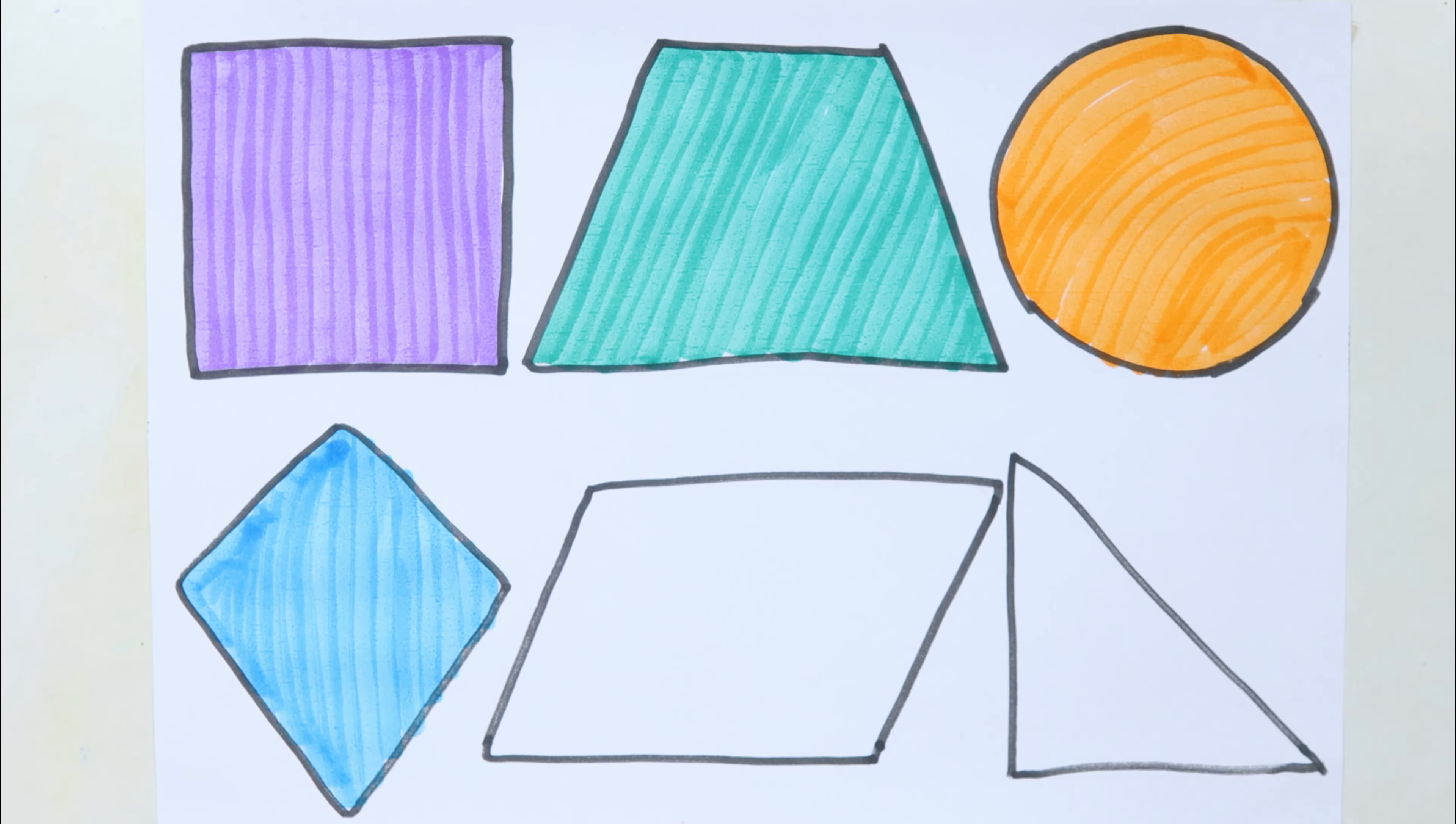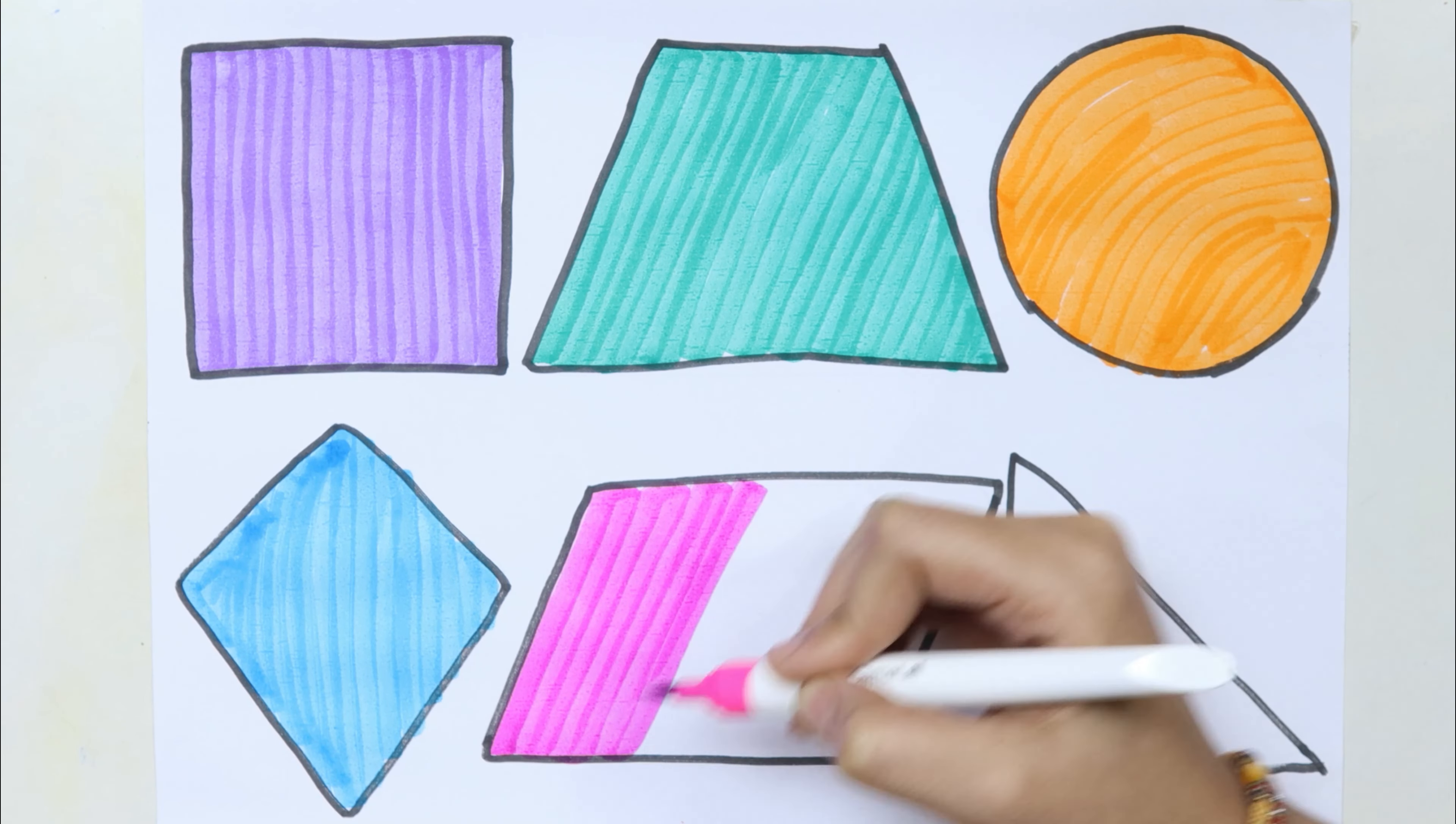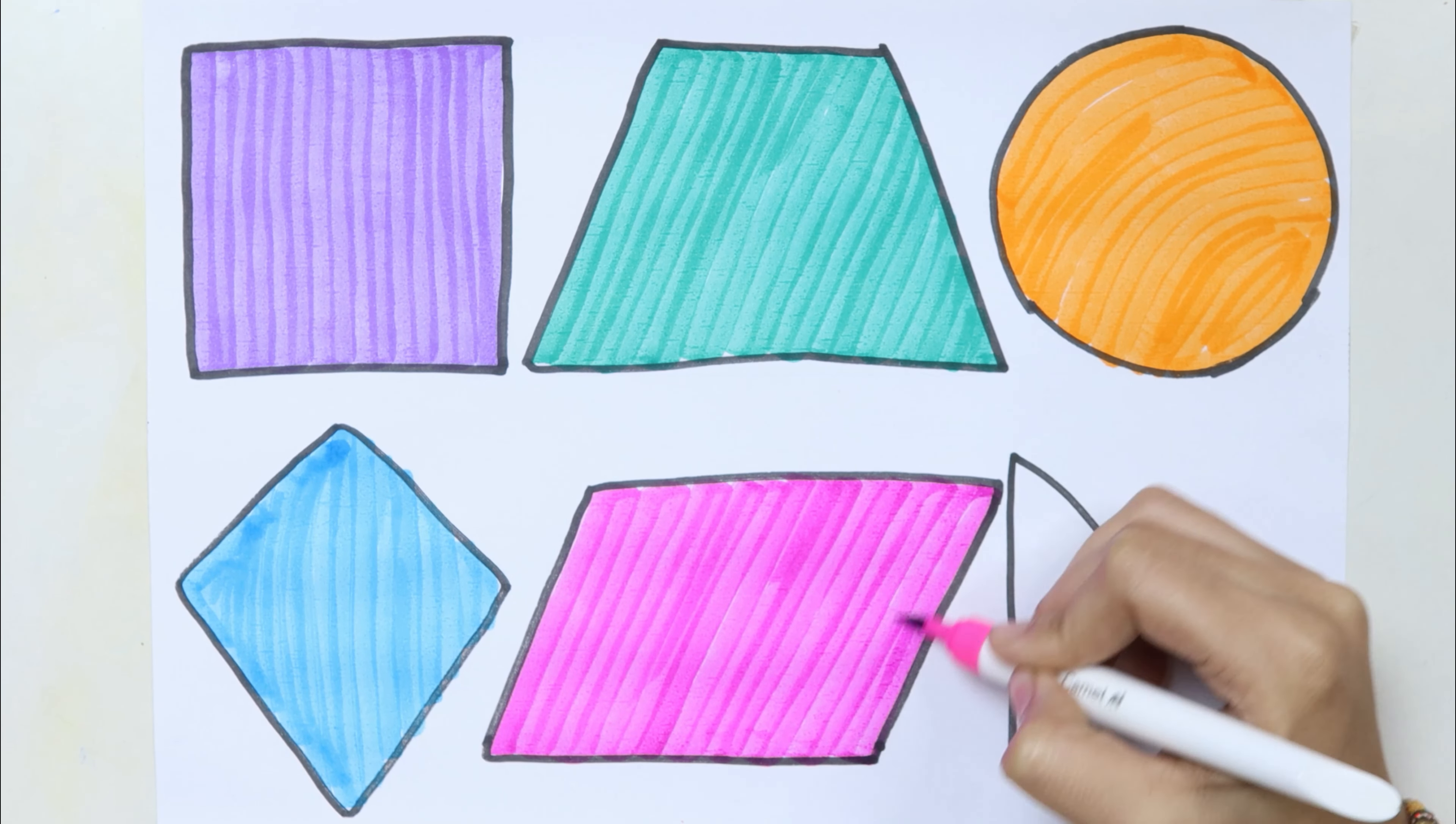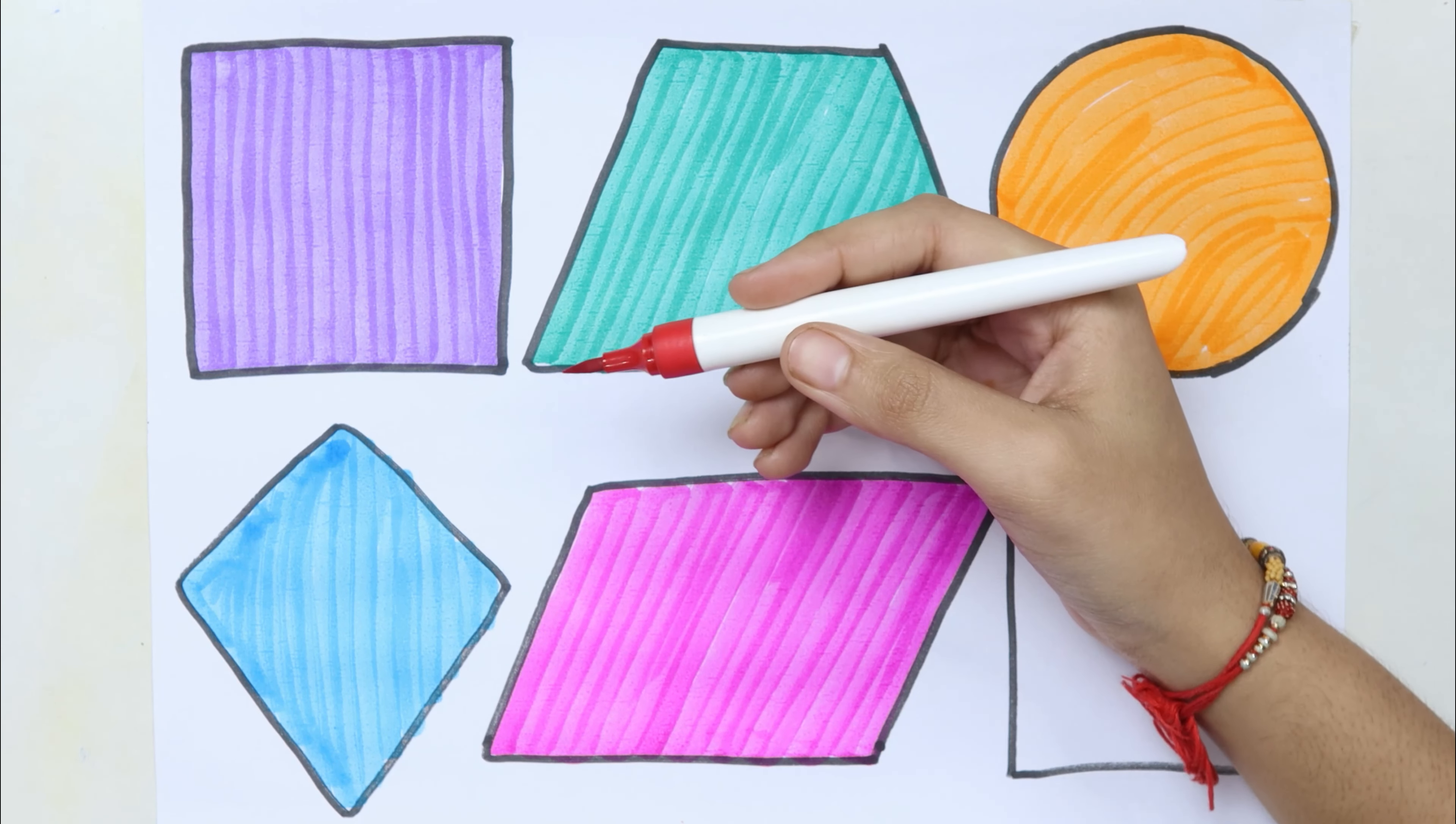Kite, pink color. When the blazing sun is gone, when the blazing sun shines upon. Parallelogram, red color.